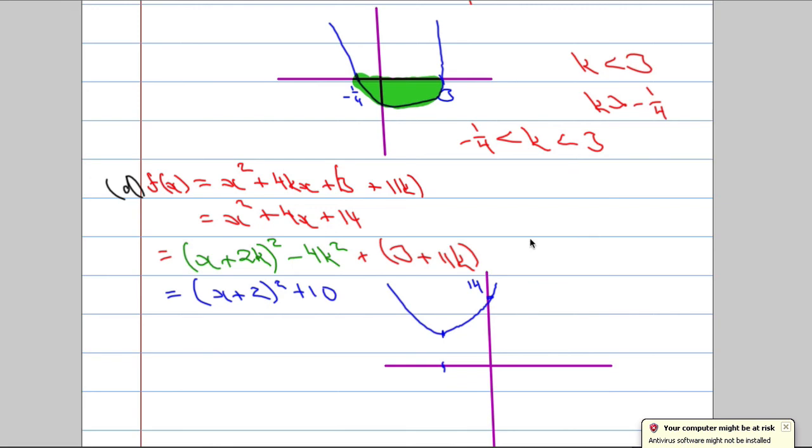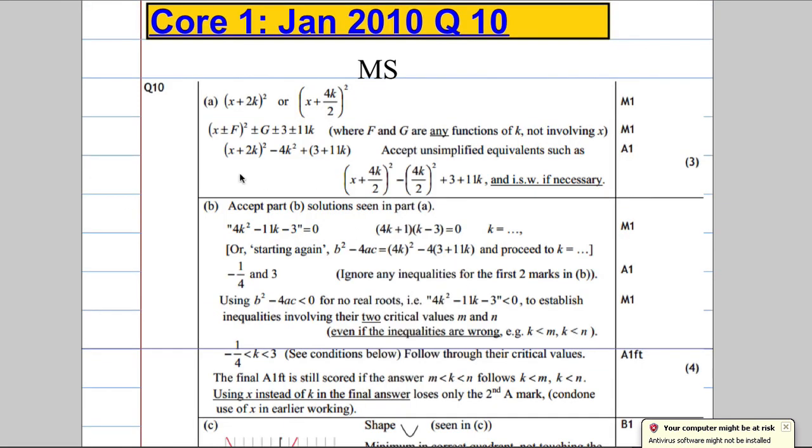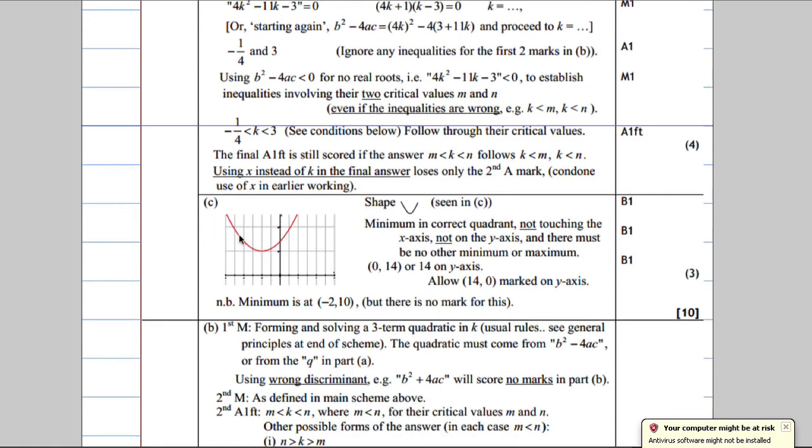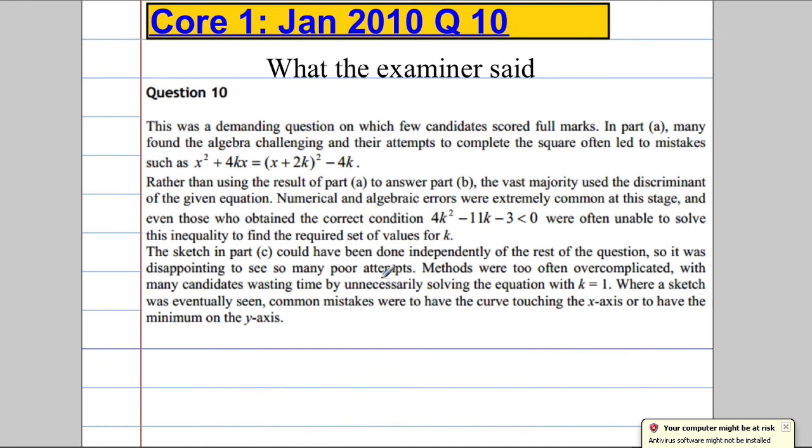Right, let's see what the examiner said. So, this is what we were looking for. We had that earlier on, the completing the square part. We had our critical values at negative 1 quarter and 3 and our sketch is there and you can see that we've got the correct value 0, 14 or 14 on the y-axis. Now, it says here the minimum is at negative 2, 10 which we worked out but there's no mark for that but it is worth knowing. Okay, question 10 a very demanding question. Very few people got full marks.